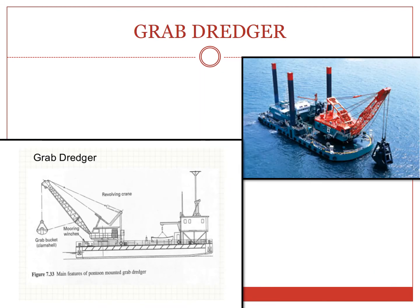Grab dredger. This is the most common type of mechanical dredger. In this type, a grab, similar to a clamshell, is suspended by a cable or chain from an extending boom or crane. The grab can be opened or closed by a suitable mechanism. The jaws are then closed by pulling up the enclosed mass of earth when lifted. The grab is then swung to the convenient position and the material discharged by opening the grab. In this figure, you can see the pontoon, the boom, and the cable with the grab.